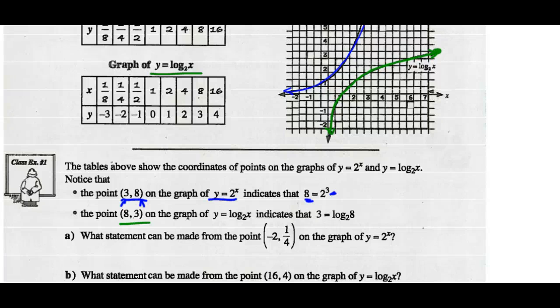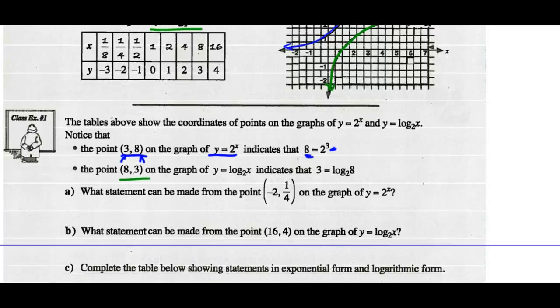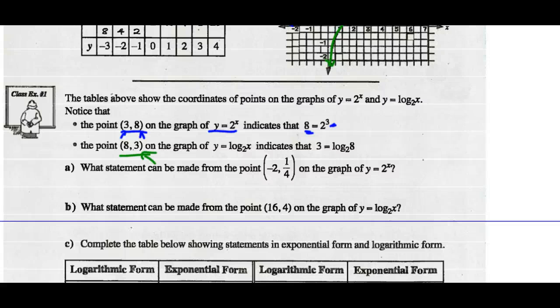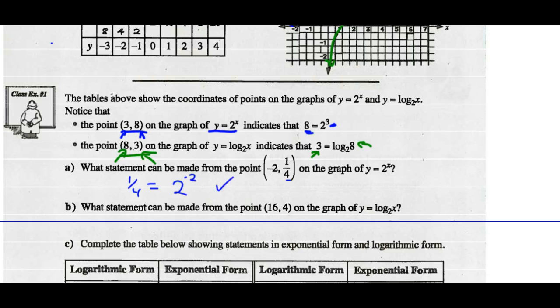When y is 3, x is 8. So if we read part a: what statement can be made from the point (negative 2, one quarter) in the graph of y equals 2 to the x? Well, we can say when y is a quarter, x should be negative 2. So does one quarter equal 2 to the negative 2? Yes, that's a true statement. And what statement can be made from the point (16, 4) in the graph of y equals the log of x base 2?